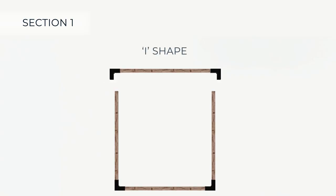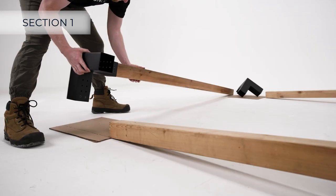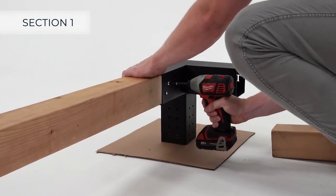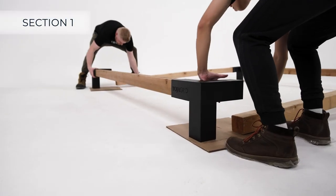Next, create the I shape in the same way. Connect the I and the U shape, securing them with screws.